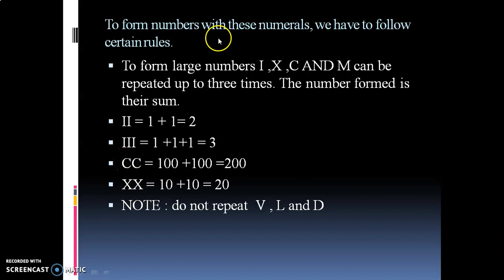To form numbers with these numerals, we have to follow certain rules. To form large numbers, I, X, C, and M can be repeated up to 3 times. The number formed is their sum. II equals 1 plus 1. Value of I is 1, so we write 1 plus 1 equals 2. Similarly 3, 200, and 20. Note down: do not repeat V, L, and D.